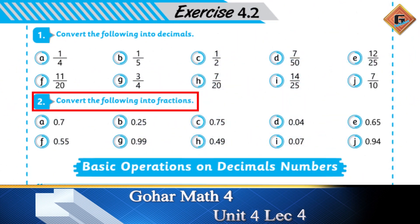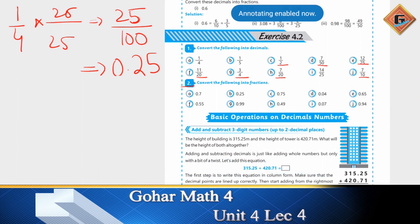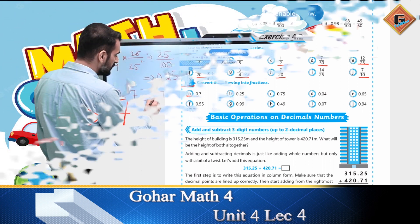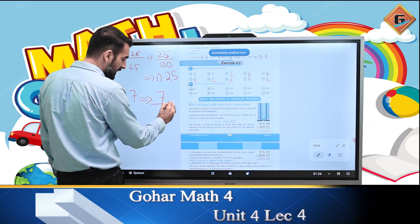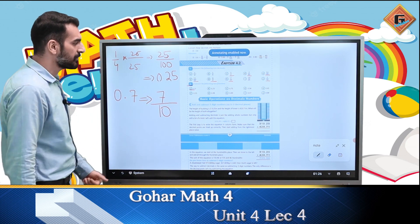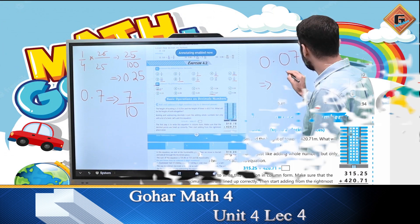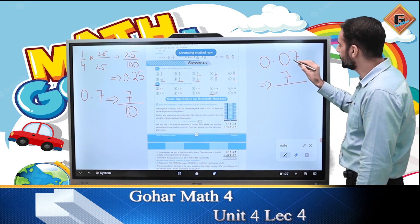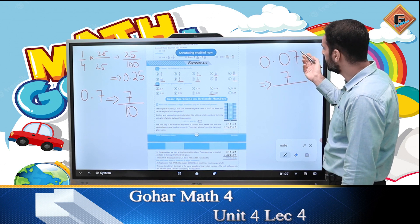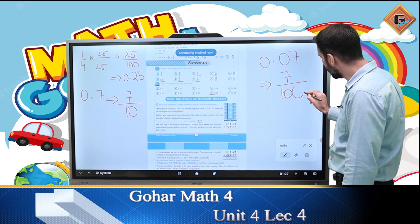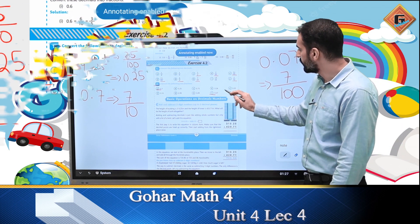Next question है — convert the following decimals into fractions। जैसे 0.7 में 7 लिखा है 10th place पे, तो fraction में change करने के लिए decimal हटाकर 7 लिखेंगे और denominator में 10। अगर 0.07 हो, तो 7 आएगा लेकिन यह 7 है 100th place पे और 10th place पे 0 है, इसलिए नीचे denominator 100 आएगा — यानि 7/100।